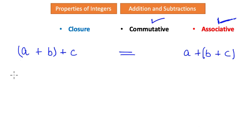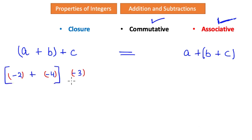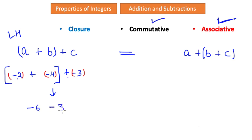Let us prove that with some numbers. Take negative two, negative four, and negative three, grouped as (negative two plus negative four) plus negative three. On the left-hand side: negative two added with negative four gives negative six. Then negative six added with negative three — since this positive and negative make a negative — gives negative nine.